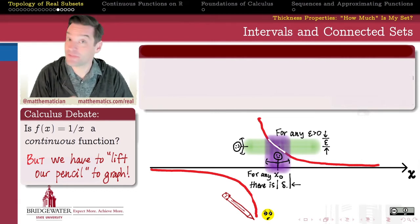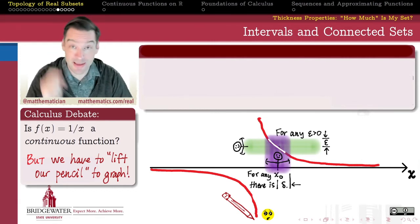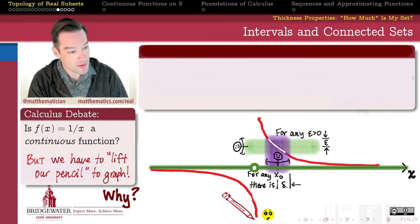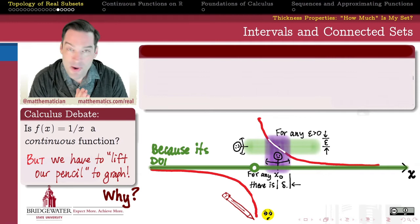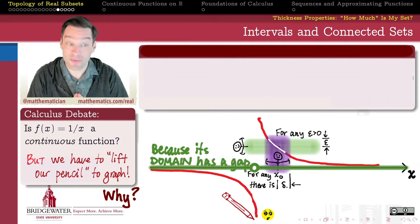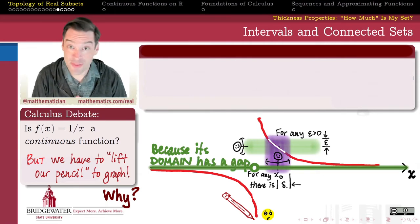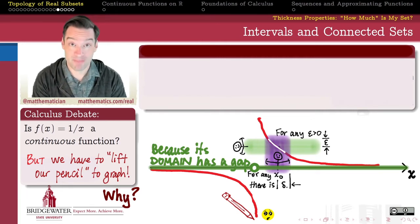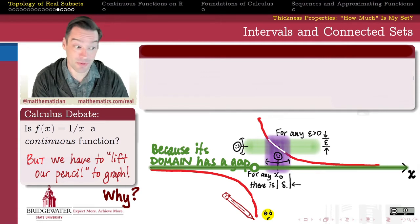Is it a problem with the function's formula, which is what we usually think from our calculus brains, or is it a different problem? And what I want to convince you of in this video is that it's a different problem. It's not the function's formula, it's not the fact that we're dividing by x that really creates the problem here. Really the problem is the domain. It's a set problem, not a formula problem.